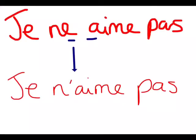There's only one thing you need to be aware of when using NE and PAS. In this sentence, we've put the NE and the PAS around the verb. However, there is a problem, because the E from the NE and the A in 'aime' clash, and it's not particularly easy to say 'je ne aime pas'. Therefore, for ease of pronunciation, we get rid of the E and just add an apostrophe to show where it used to be. We end up with 'je n'aime pas', which is much easier to say, and is still the negative, meaning I don't like.